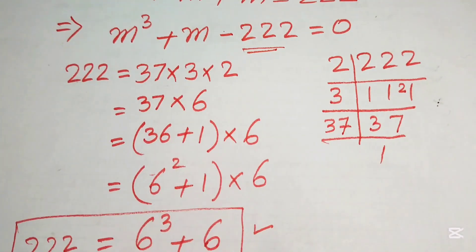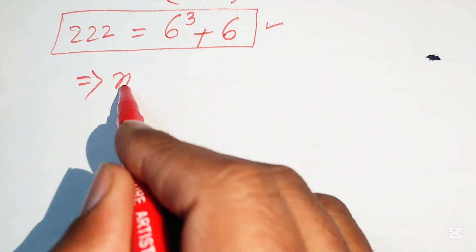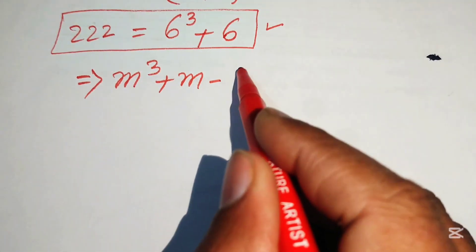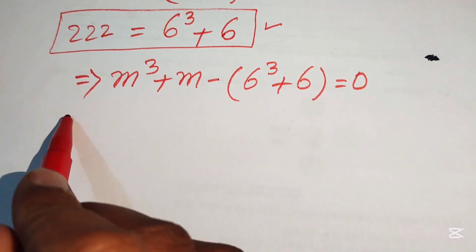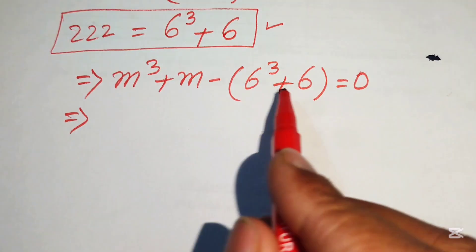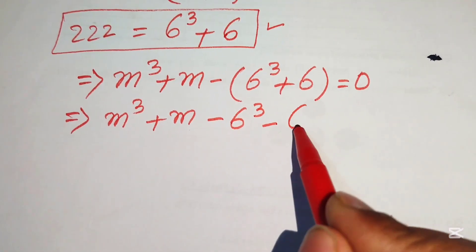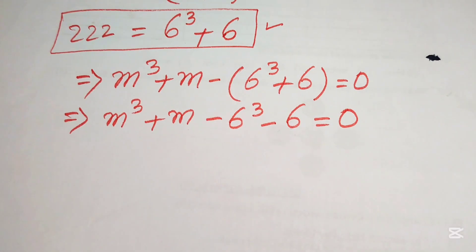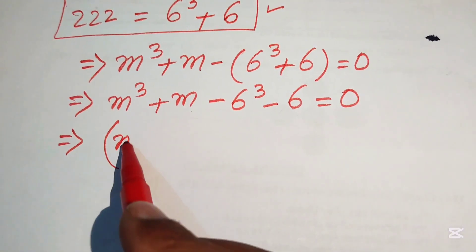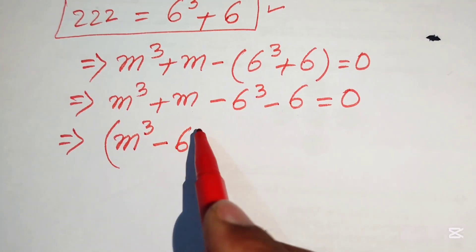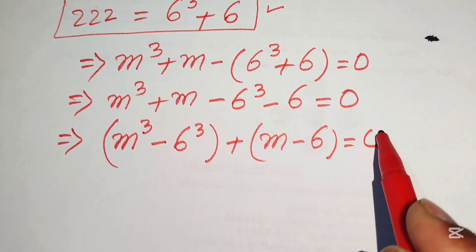We replace 222 with 6³ + 6 in our equation, giving m³ + m − 6³ − 6 = 0. We then distribute the negative sign: m³ + m − 6³ − 6 = 0. We pair the cubic terms and the linear terms: (m³ − 6³) + (m − 6) = 0.